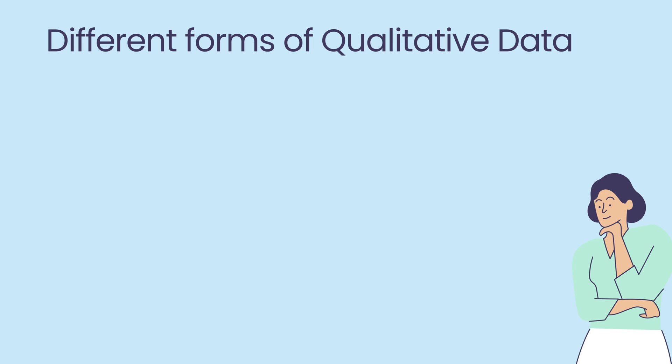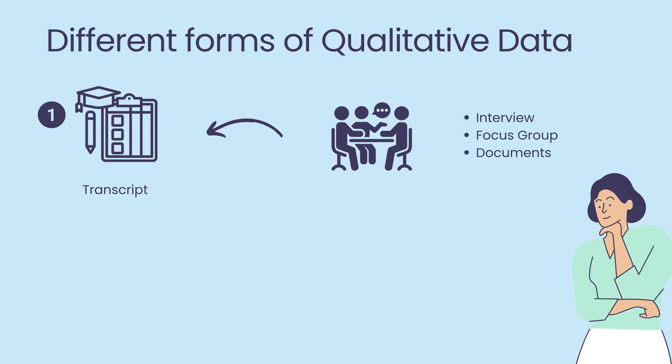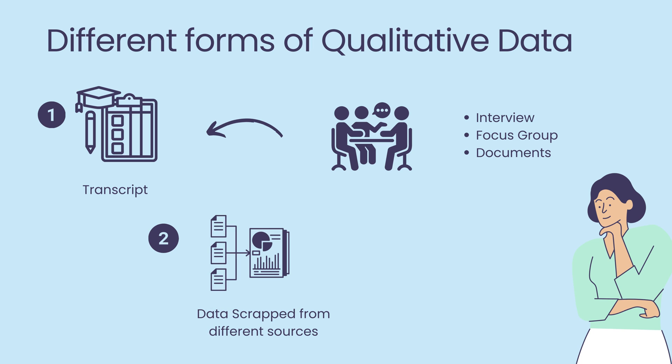Now, let's delve into the primary approaches used in qualitative data collection today. Firstly, we have transcripts from interviews and focus groups, which provide rich, first-hand insights into participants' perspectives. Secondly, data from various online sources offer a wealth of unfiltered information, revealing trends and sentiments across diverse platforms. Lastly, open-ended survey data allow respondents to express their thoughts freely, offering valuable qualitative data alongside quantitative metrics. Understanding and leveraging these diverse forms of qualitative data is essential for gaining comprehensive insights into complex phenomena.